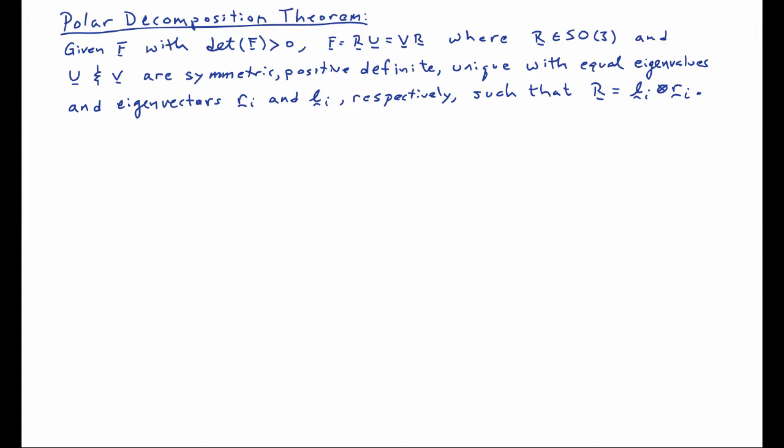The rotation R itself can be written in terms of these eigenvectors as L_i tensor outer product R_i. I'd like to go through the proof of this theorem, which will allow us to exercise some of our tools that we've developed. Just before doing that, let me note that U is called the right stretch tensor and V is known as the left stretch tensor.